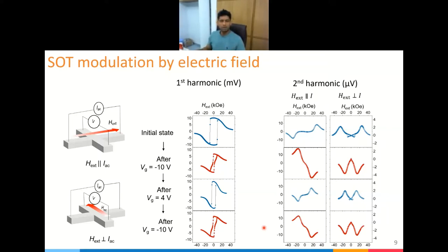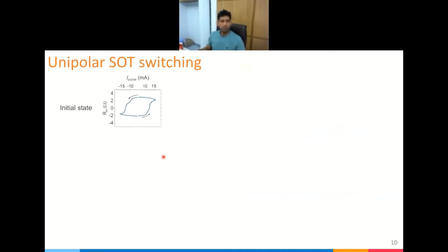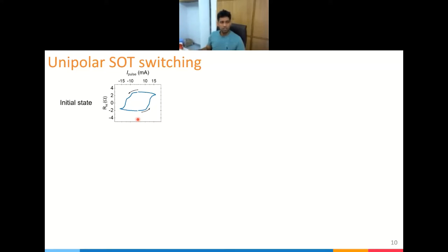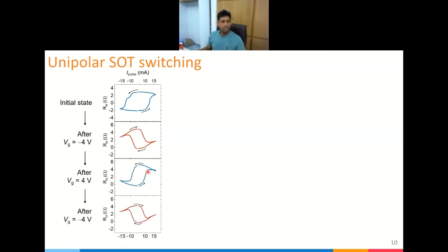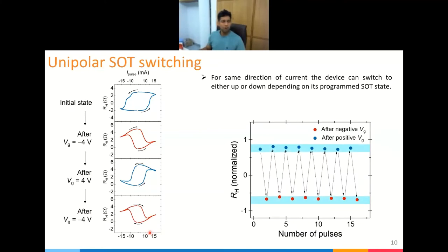We also demonstrate unipolar switching. Normally in an SOT device, to change the switching direction you must change the current direction. In the initial state, positive current switches the magnet up and negative current switches it down. After applying negative gate voltage, positive current switches the magnet down and negative current switches it up. After applying positive gate voltage, the direction reverses again. So by applying same-polarity current pulses while toggling the gate voltage, we can switch the magnet up, down, up, down — which is not possible in a conventional SOT device.